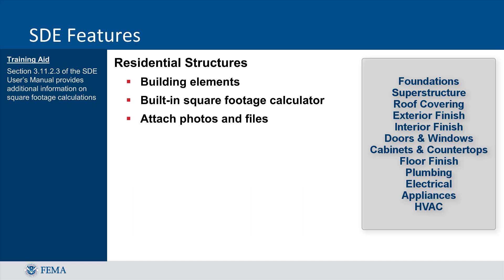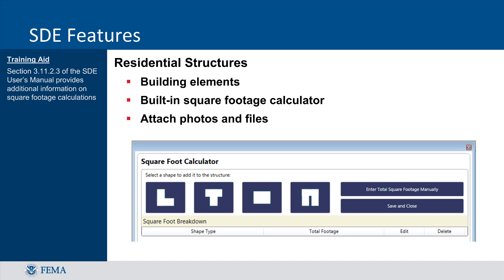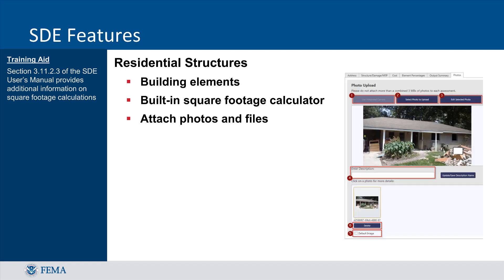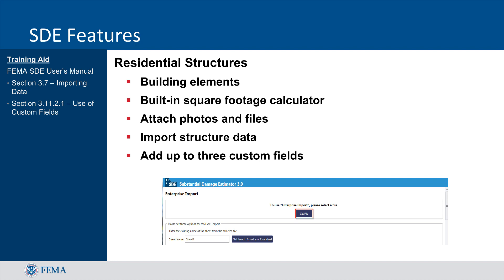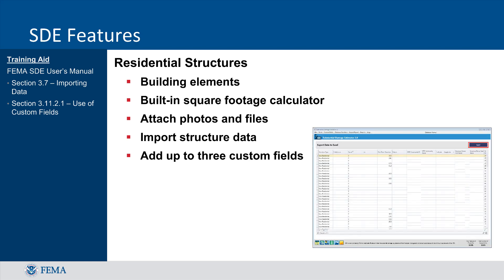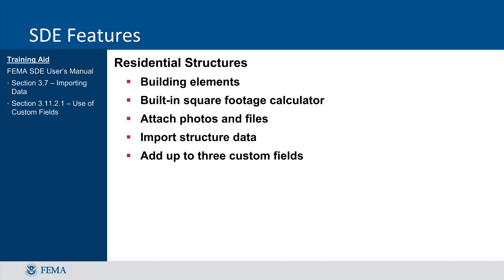Each of the 12 residential elements is assessed separately, and a percent damage determination is made for each. There is also a built-in square footage calculator that facilitates determining the square footage of a structure if that information is not already known. Another useful feature is the attachment tool, which allows users to upload attachments such as photos of the structure, elevation certificates, and other useful documentation. Finally, the tool allows the user to import or export data from non-SDE databases so that users with structured data from an existing database can easily import that data into the tool and also export the resulting assessment to a format compatible with local programs or systems. There is also an option to add up to three additional data fields so that extra information can be collected in the field as well.